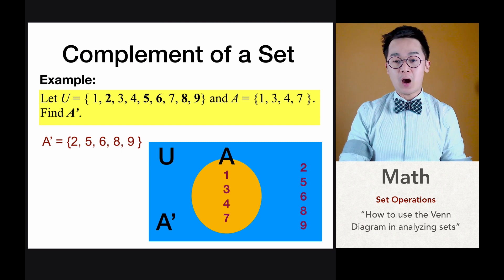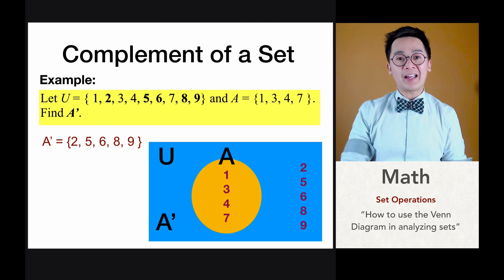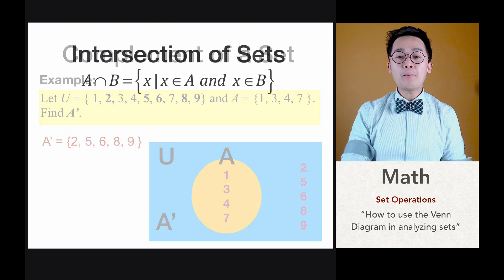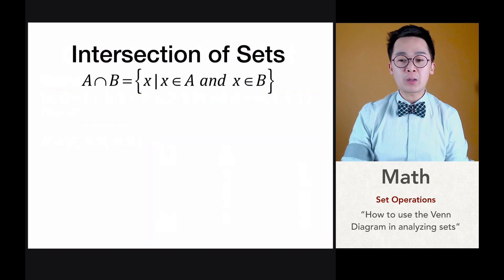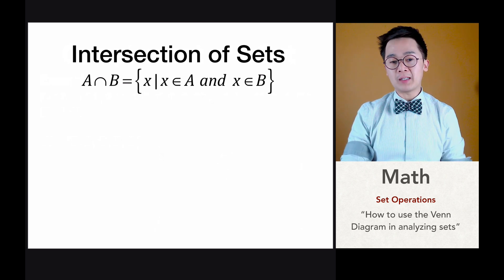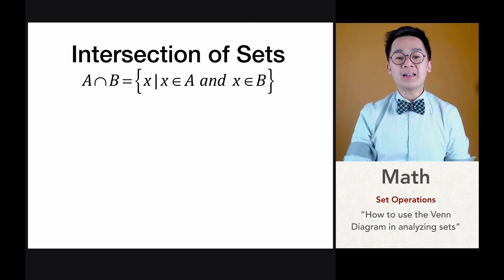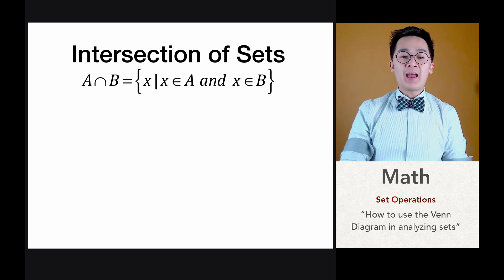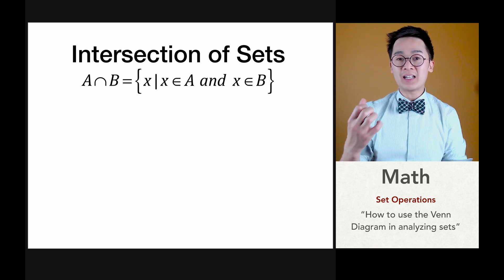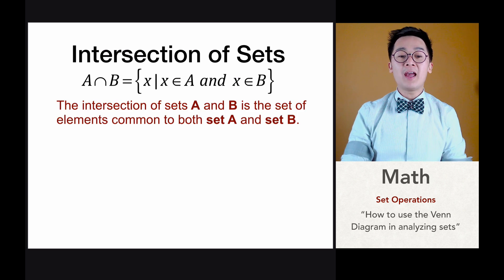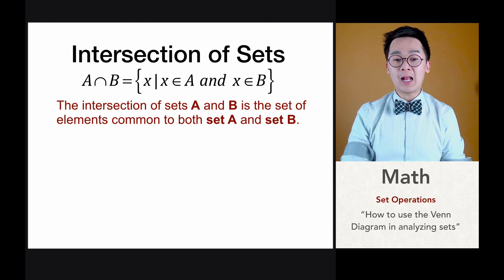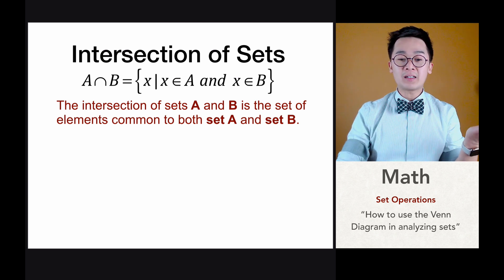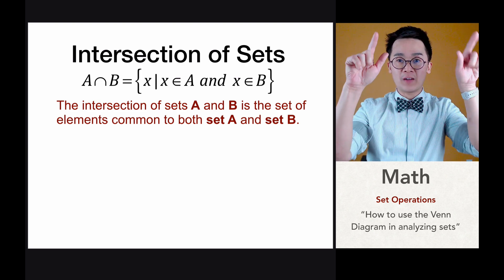Another operation in set notation is A intersection B, denoted by the downward U symbol. In A intersection B — also known as A and B, or the AND operation — X is an element of A and X is also an element of B. The intersection of set A and B is the set of elements common to both subset A and subset B in a given union set.